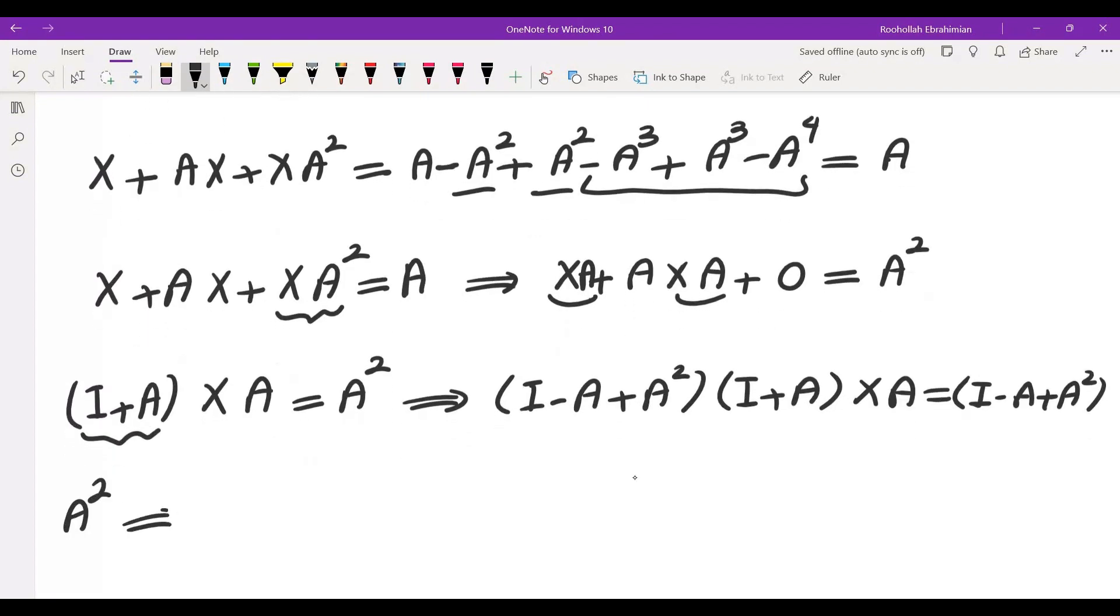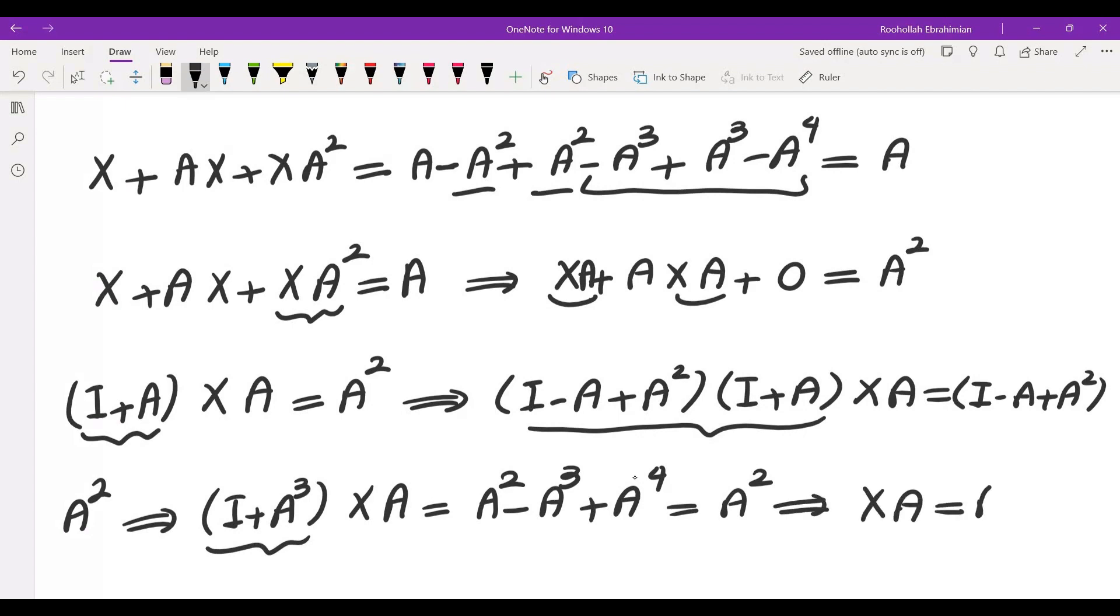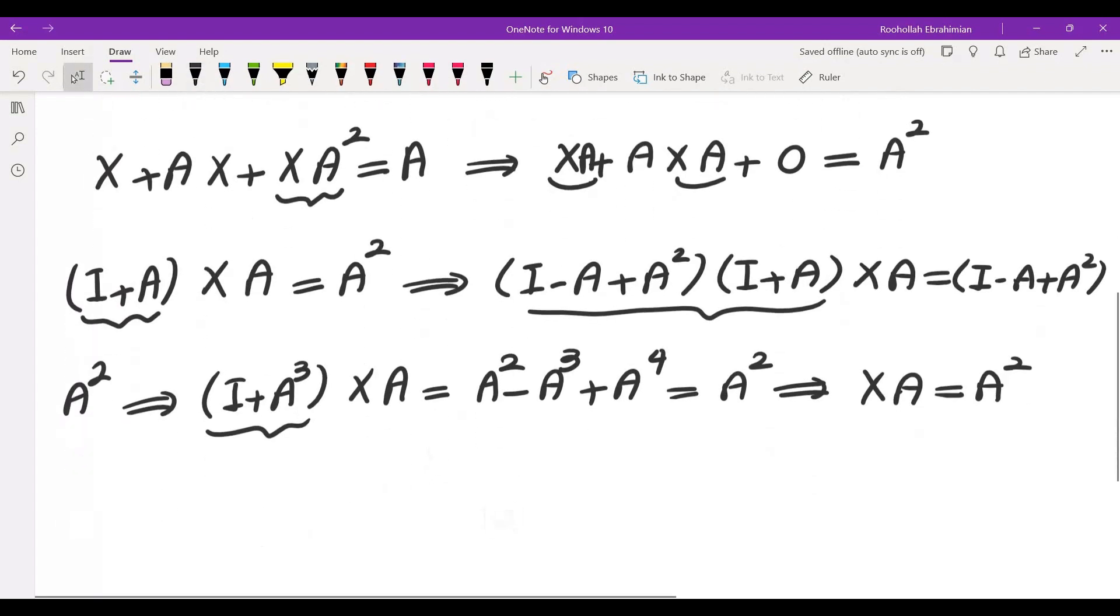Times A squared. So that gives me - these two are I plus A cubed, and A cubed is 0, so it's the identity. The right side becomes A squared minus A cubed plus A to the fourth, which is A squared. So this tells me that XA is in fact A squared.